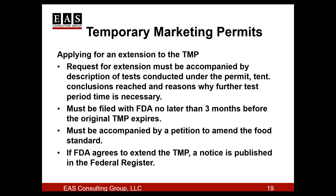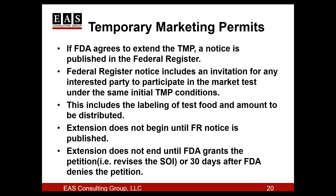The request for the extension must be accompanied by a petition to amend the standard of identity. When FDA grants the extension, they will also invite all interested parties to participate in the market test under the same conditions. When the petition that accompanies the TMP extension is accepted by FDA, the docket is opened — FDA will not immediately act on the petition, because that's a separate and very long process. Under the extended temporary marketing permit, FDA invites everyone else who wants to apply to join in, and the extended temporary marketing permit never ends — it won't expire until FDA either grants or denies the petition to change the food standard of identity.